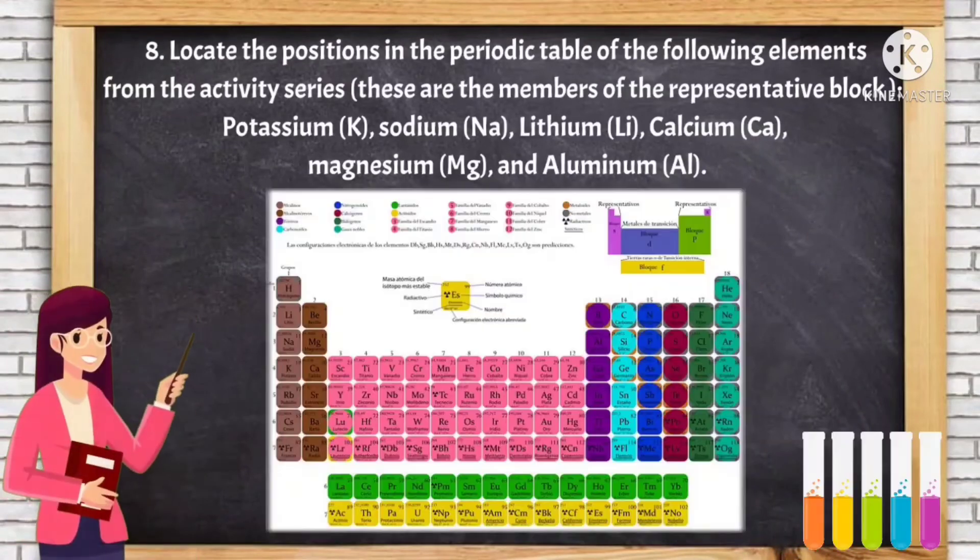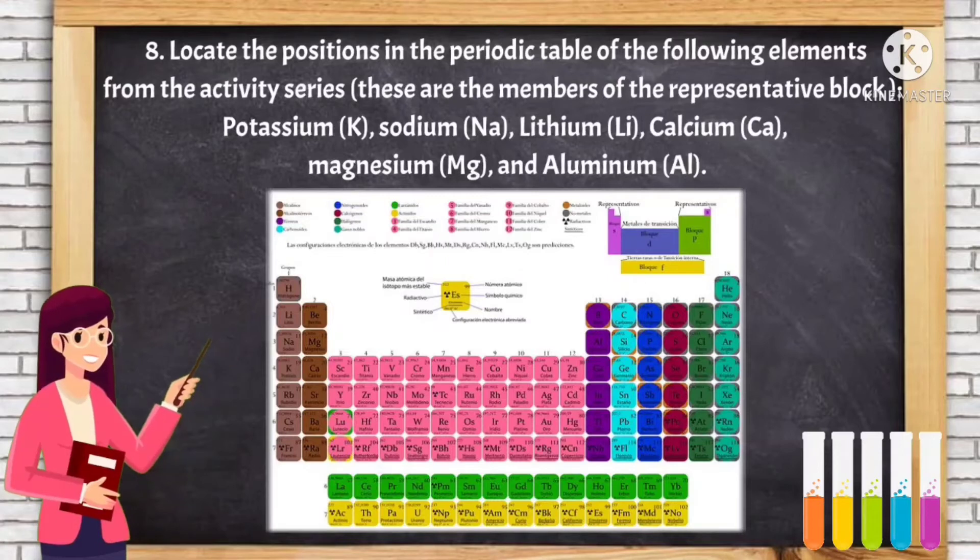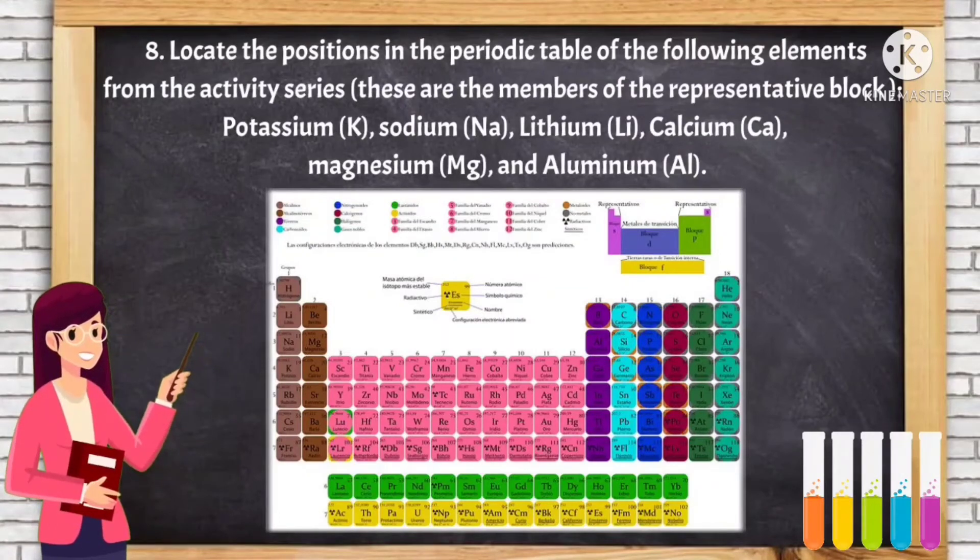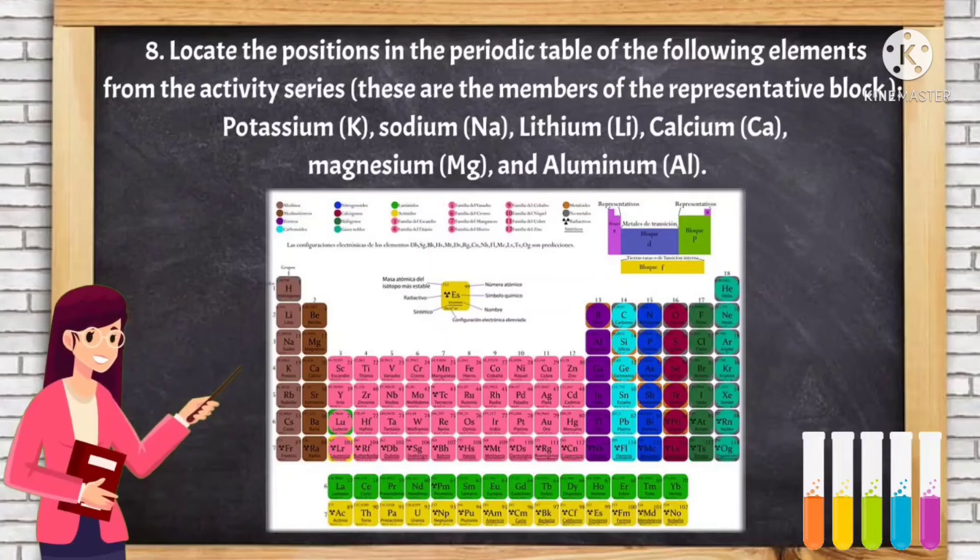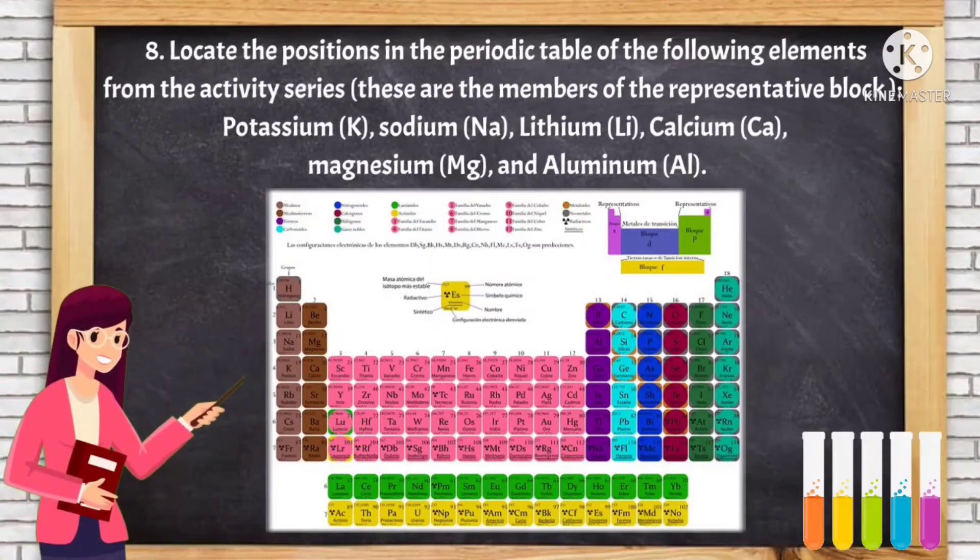Number eight, locate the positions in the periodic table of the following elements from the activity series. These are the members of the representative block: potassium, sodium, lithium, calcium, magnesium, and aluminum.